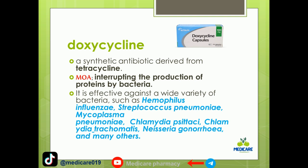The mechanism of doxycycline involves interrupting the production of proteins by bacteria. It inhibits bacterial protein production.